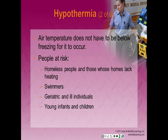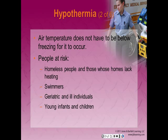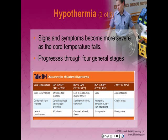Air temperature does not have to be below freezing for hypothermia to occur. Those most at risk include the homeless, people whose homes lack heating, swimmers even in summer, elderly and ill individuals less able to adjust to temperature extremes, and young infants and children who cannot put on clothes, have a relatively large surface area, less body fat, and an inability to shiver effectively. Also at risk are patients with injuries or illness such as burns, shock, head injury, stroke, generalized infection, spinal cord injuries, diabetes, and hypoglycemia.